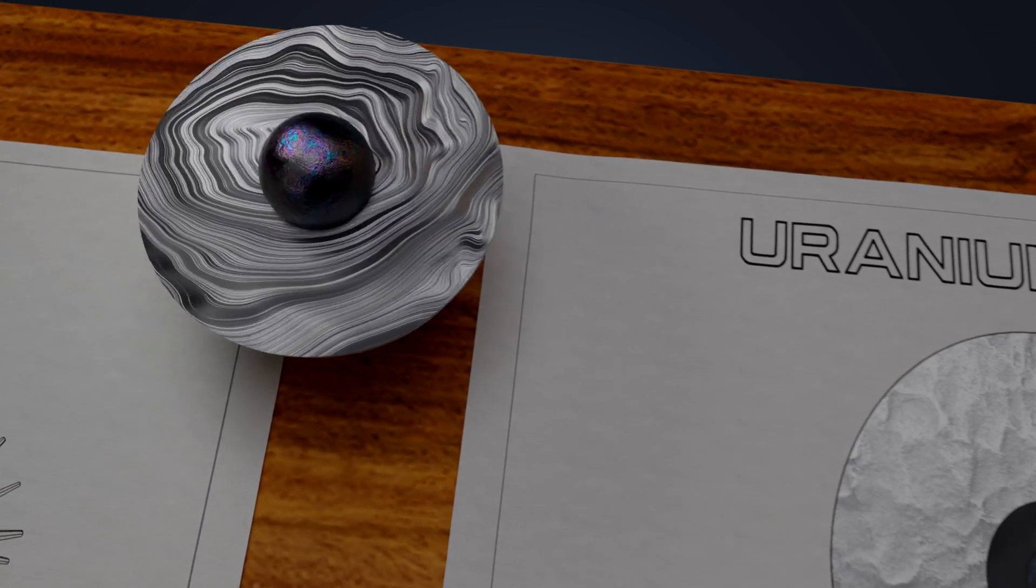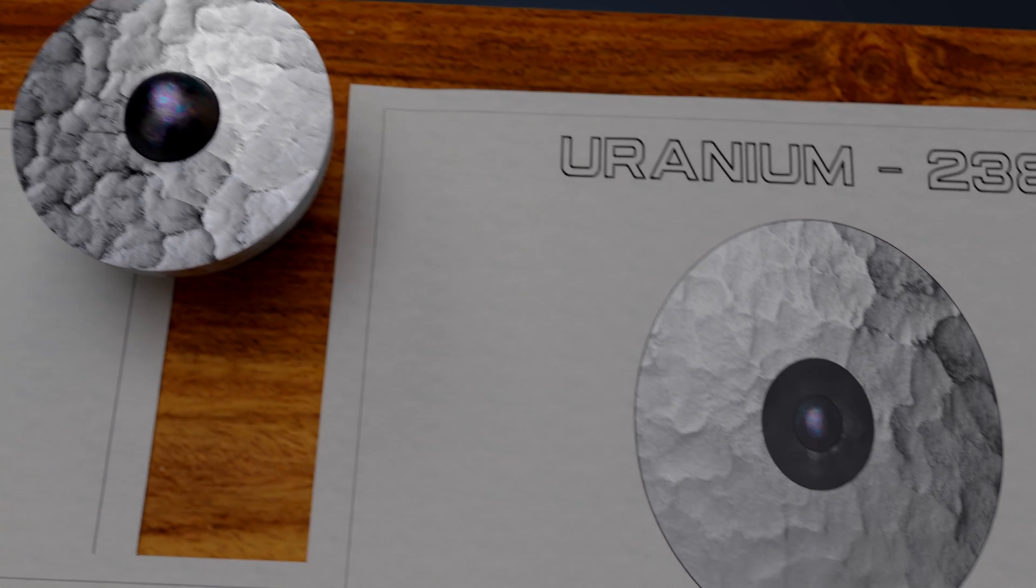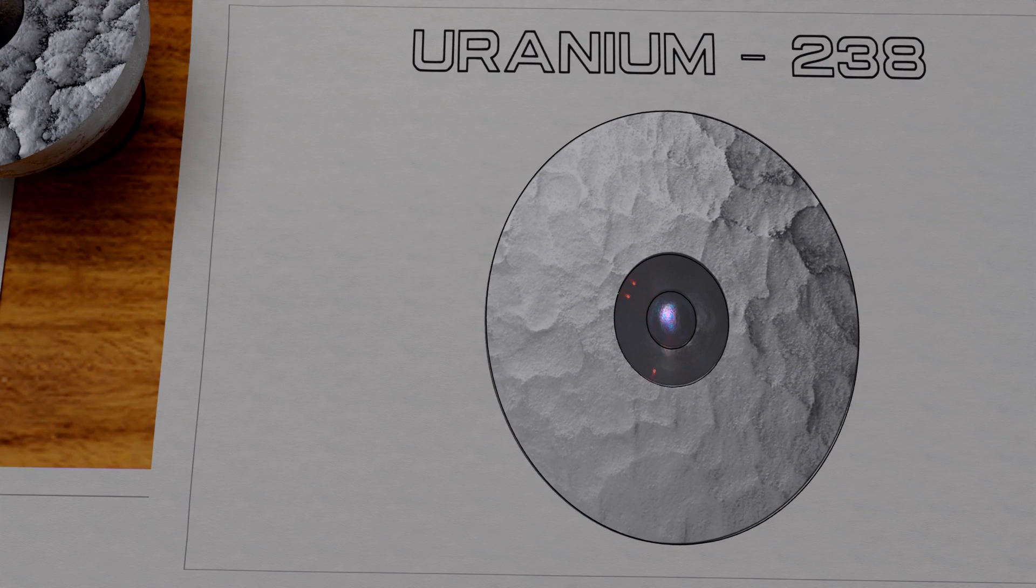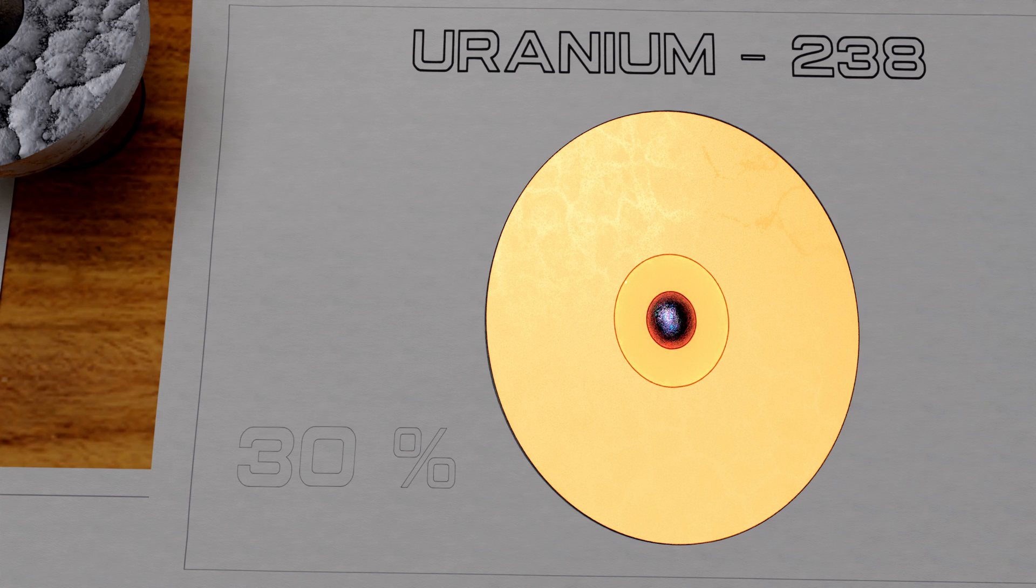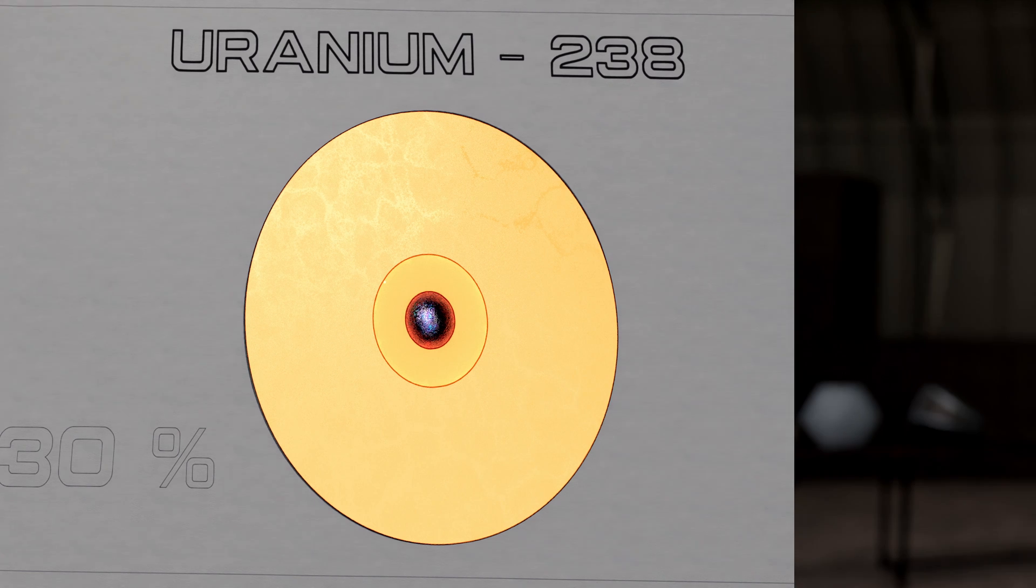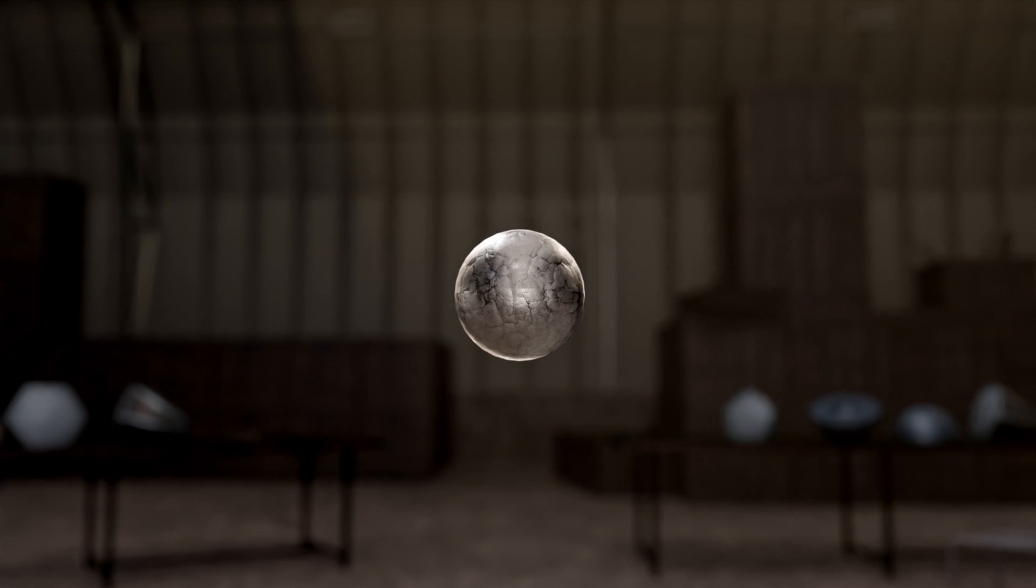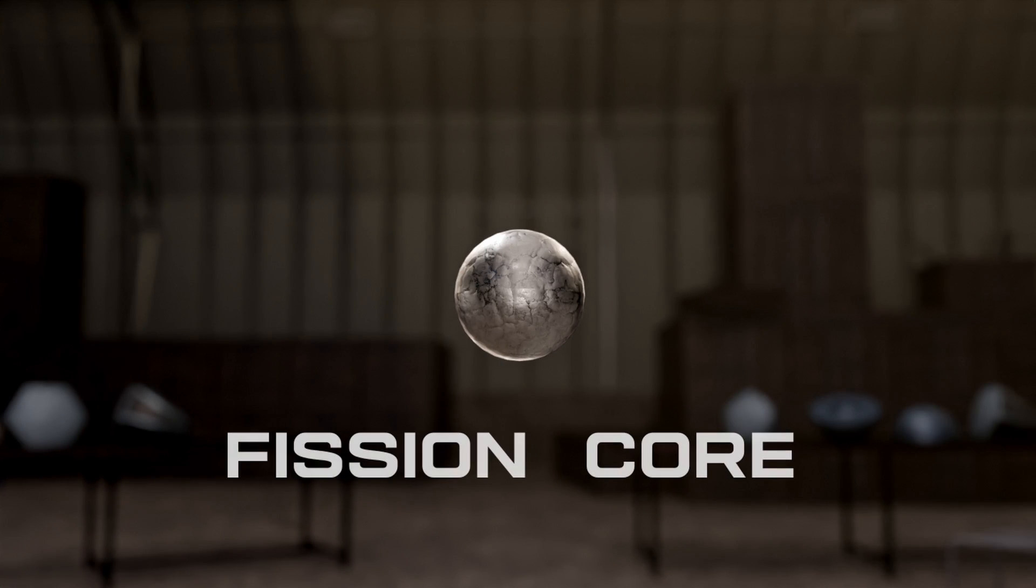Covering plutonium, there is a layer of uranium-238. It reflects the neutrons back into the plutonium. But when fast neutrons strike it, uranium-238 also undergoes fission process. It makes up to 30% of total explosion energy. Plutonium and uranium together forms the fission core, and it is just as big as a football.